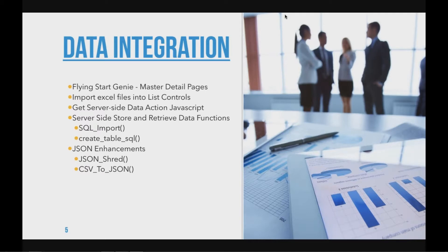On data integration there are a lot of new features. First, we've always had a Flying Start Genie that allows you to take an Access database and turn it into an Alpha web application with just a few point-and-clicks. Before, if there were master-detail relationships — a table and a sub-table with a foreign key relationship — we just created separate grids. Now, very powerfully, the Flying Start Genie will code those relationships, bringing in top-level tables and making linked connected grids for child tables that are already set up.